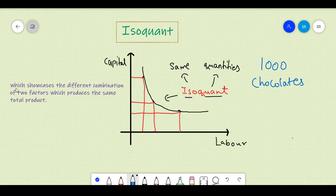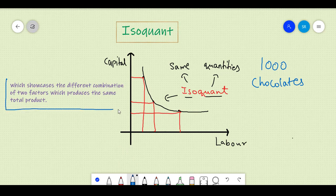Hence, to formally define isoquant, we can say that isoquant curve is that curve which shows the different combinations of two factors yielding the same total product.